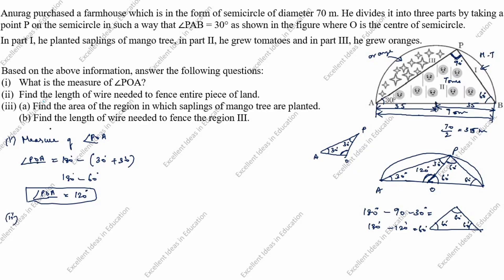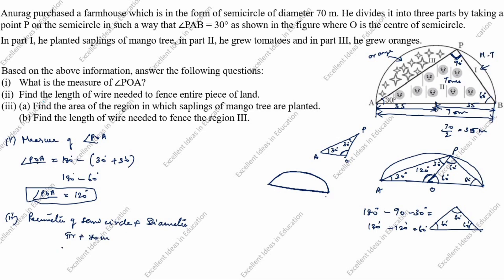The second question asks for the length of wire needed to fence the entire piece of land. The entire land is a semicircle, and we know the diameter is 70 meters. The perimeter of a semicircle formula is π·r plus d. Using π as 3.14 and r equals 35 meters: 3.14 × 35 plus 70 equals 109.9 plus 70 equals 179.9 meters.